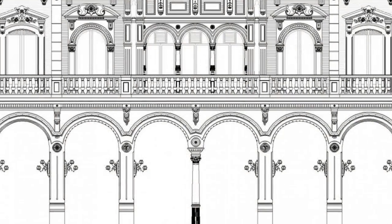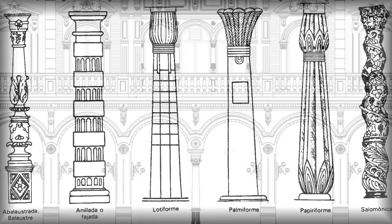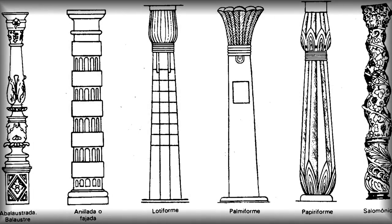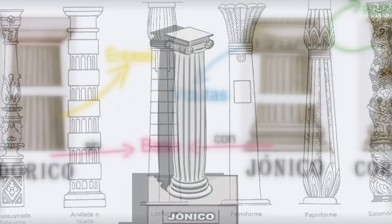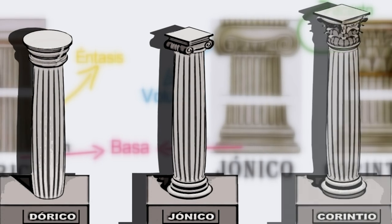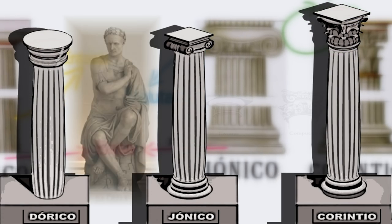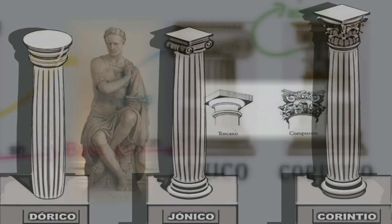Si algo caracteriza a la arquitectura grecolatina son los llamados órdenes clásicos: jónico, dórico y corintio, que los romanos enriquecieron con el compuesto y el toscano.